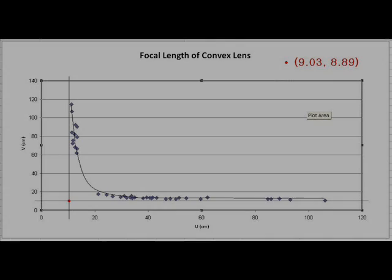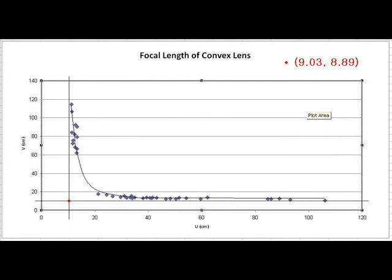Conclusion. In this experiment, our graph of data points shows that the focal length of our convex lens is approximately 9.03 cm. This means that anything within the focal length would not show any real images — it would be virtual. However, if the distance between the lens and the candlelight is greater than 9.03 cm, a real image would form.